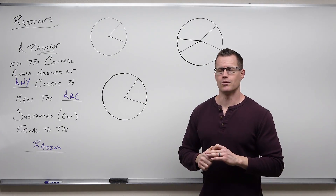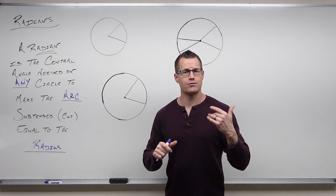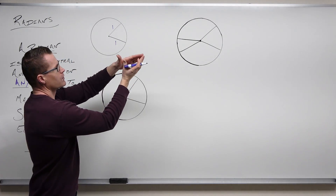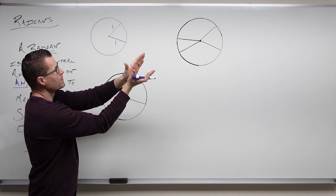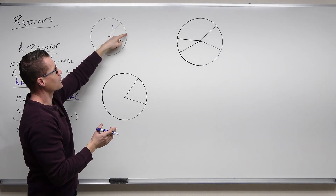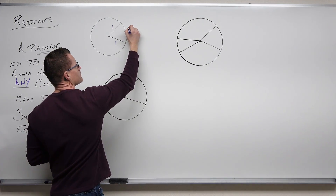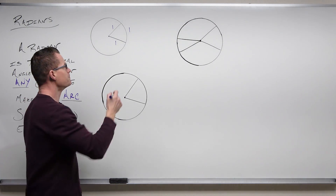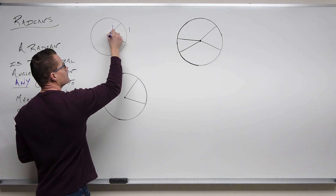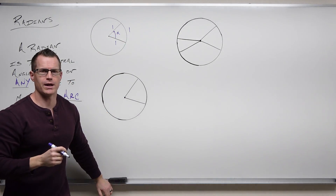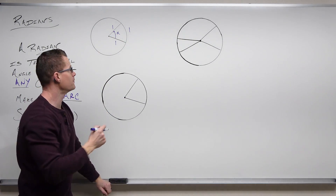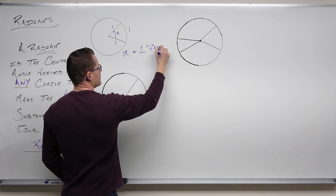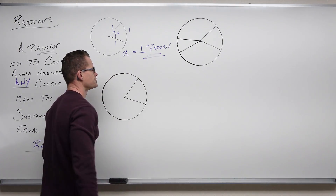Let's suppose we have a unit circle — a circle with a radius of one. Notice how those radii are creating a central angle, and also how, once they're opening, that arc length, if it's equal to the radius, whatever units they are, then the angle at the center of that circle is one radian. Let's call that alpha. We would say alpha is one radian.